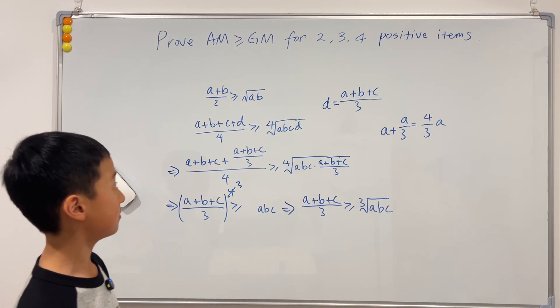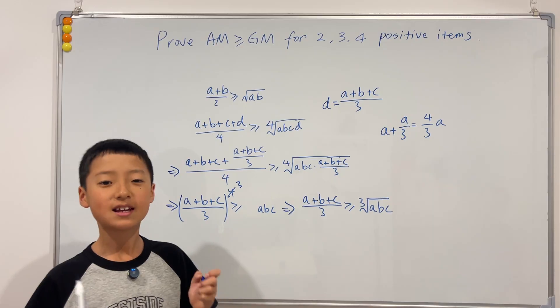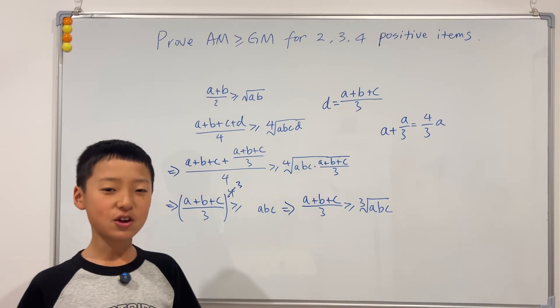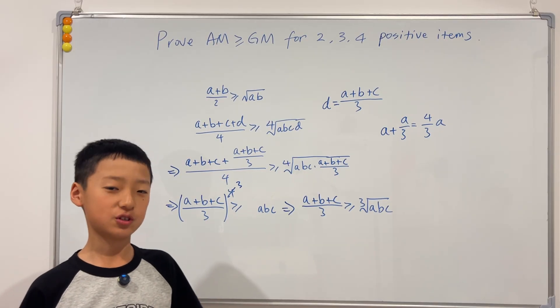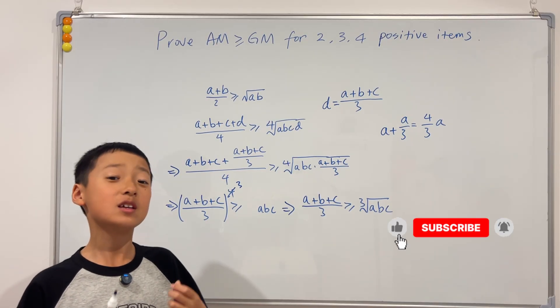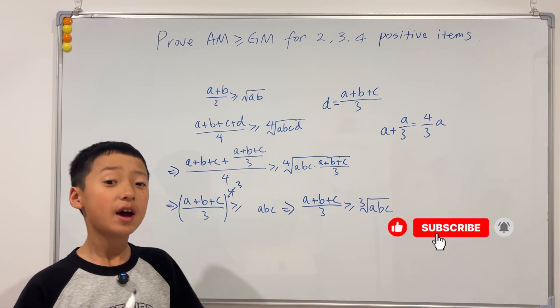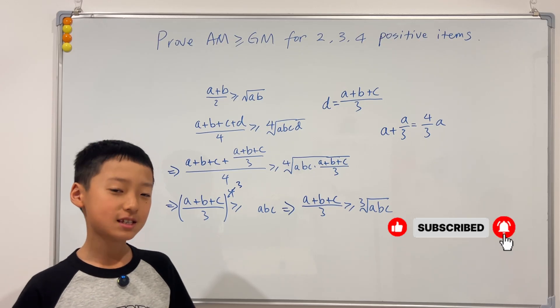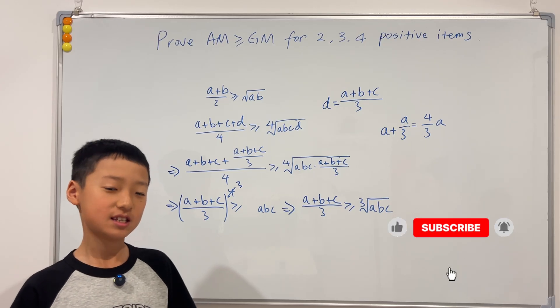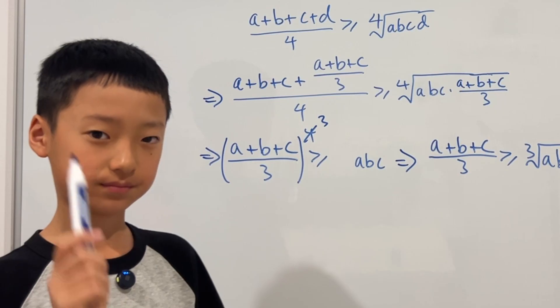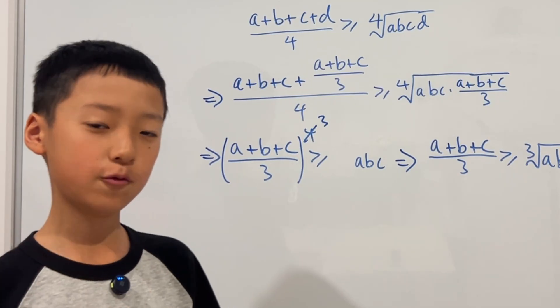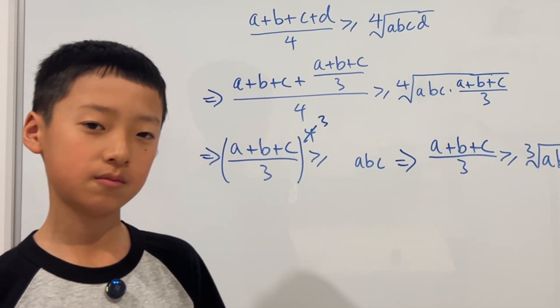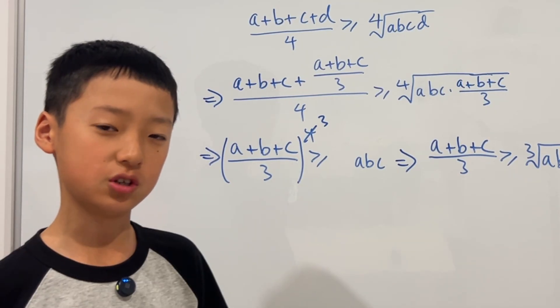Now that we've proved AM ≥ GM for two, four, and three items, this is the final answer to this very cool AM-GM question. Thank you guys so much for watching. If you enjoyed the video and want more like this, please consider liking and subscribing. And remember: if you want to master something, teach it.